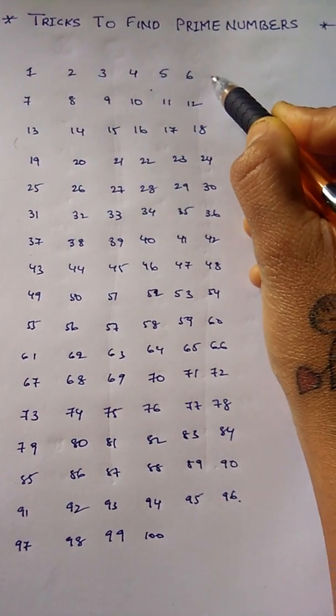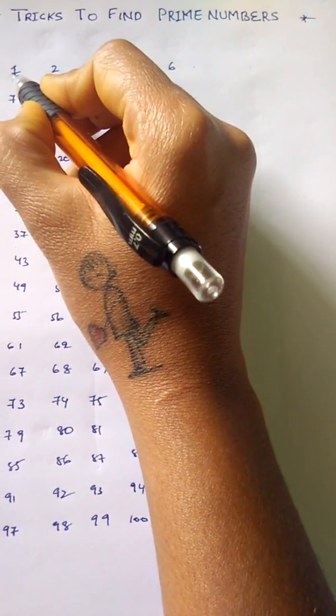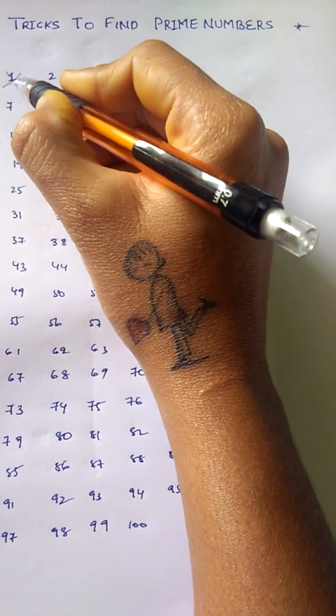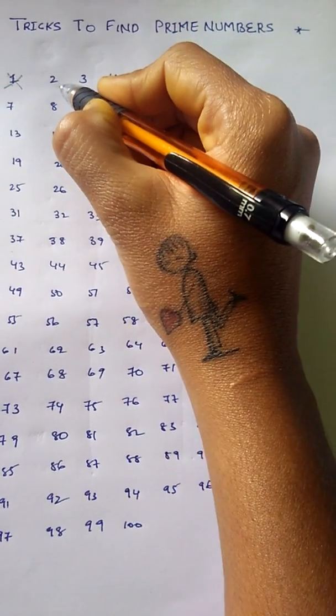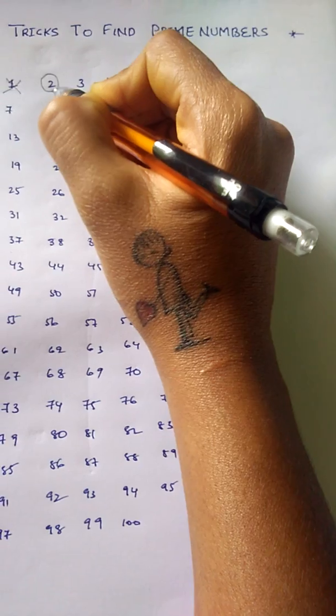Let us start to find prime numbers. 1 is not a prime number and it is not a composite number as well. Now we start with 2. I have circled 2 because 2 is a prime number.